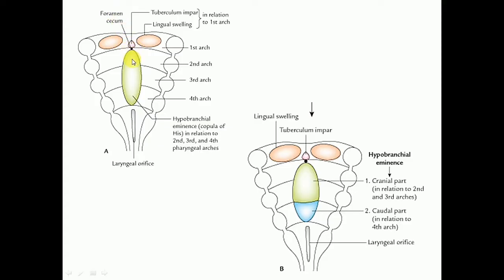Another midline swelling is also formed in relation to the medial ends of the second, third, and fourth pharyngeal arches. This swelling is known as the hypobranchial eminence or copula, and it is formed in relation to the second, third, and fourth arches.